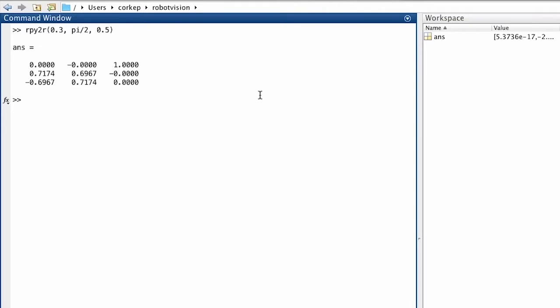Now, I'm going to convert that back to roll pitch yaw angles. To do that, I use the inverse function, tr to rpy, and I pass in the rotation matrix that we just computed, and here are the roll pitch yaw angles. You'll notice that they are quite different to those that we passed in. The middle angle, the pitch angle is the same. It's pi on 2. The roll angle has changed from 0.3 to 0, and the yaw angle has changed from 0.5 to 0.8.